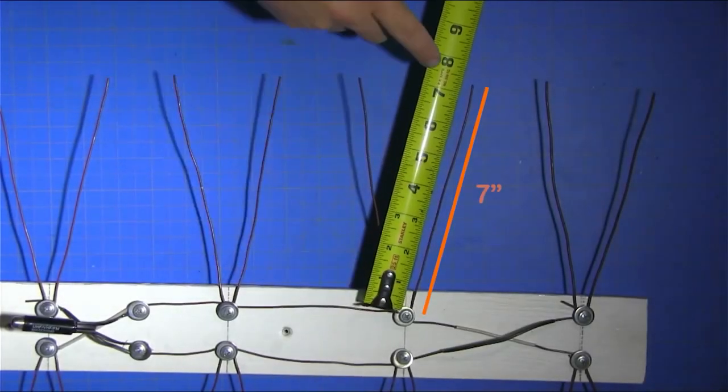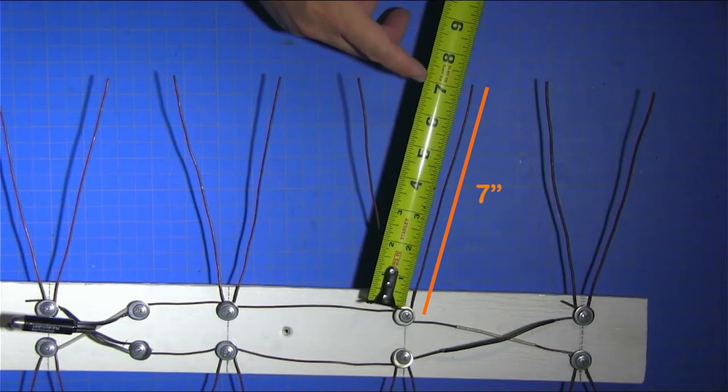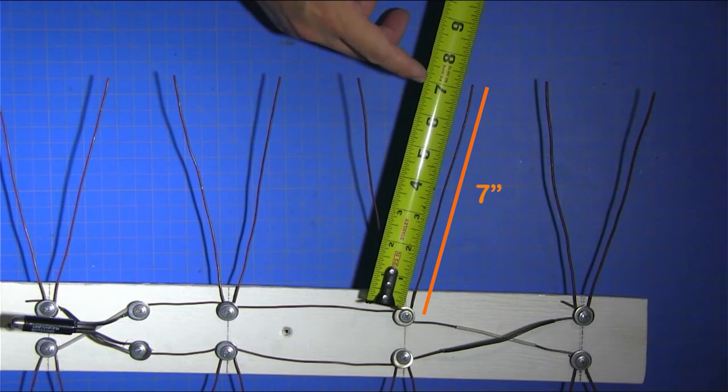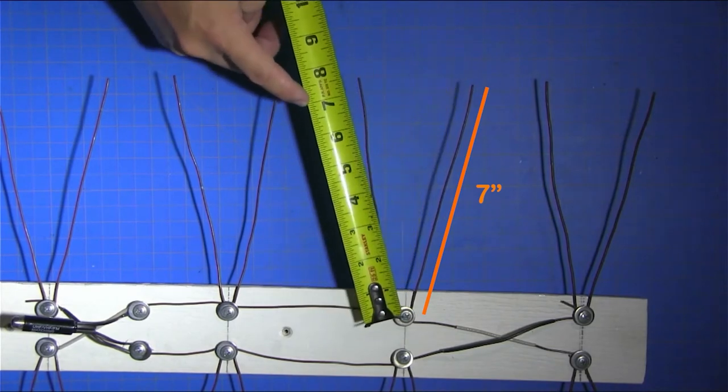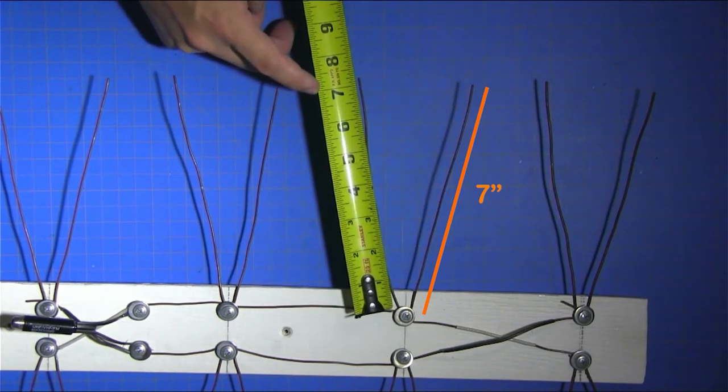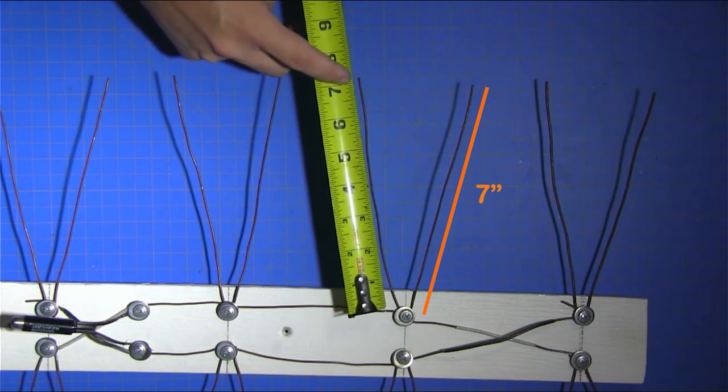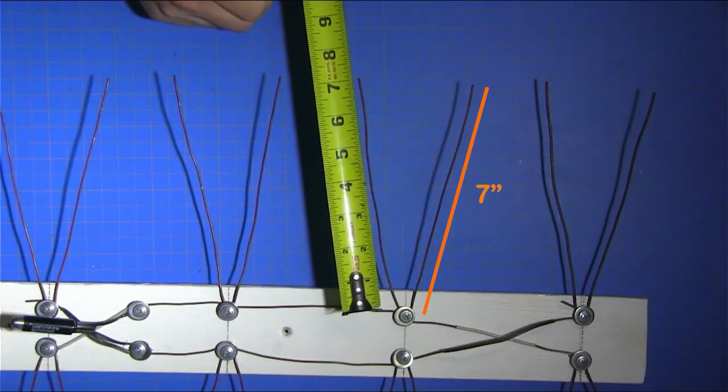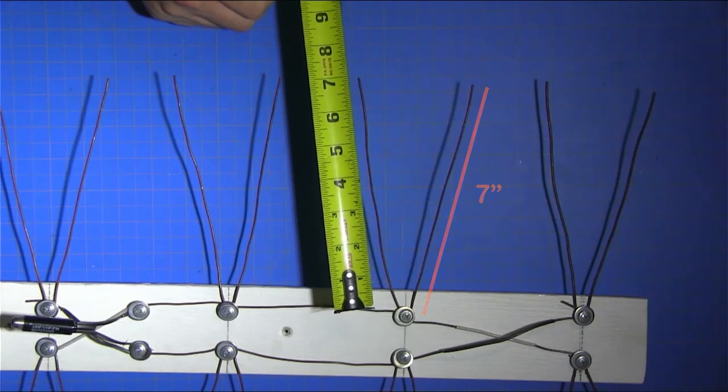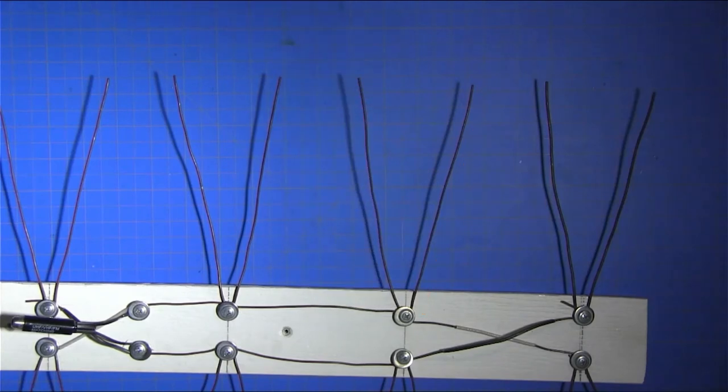So for the ears, each ear is one piece of wire that I cut at approximately 15 to 16 inches long. Then I folded it in half, wrapped it around the screw, and screwed it down to tighten it. And then I just trimmed it to seven inches. You want each one to be seven inches long.